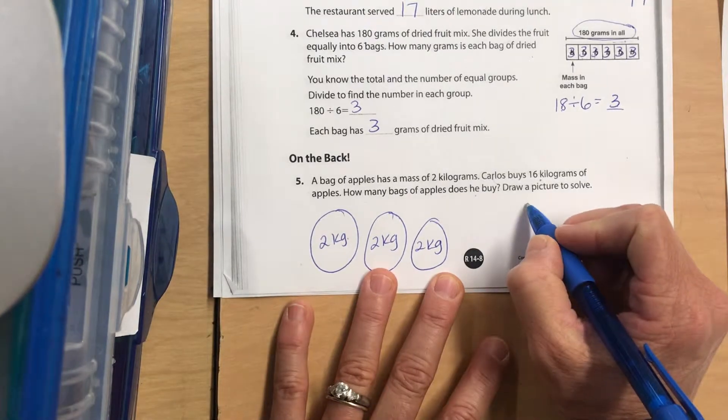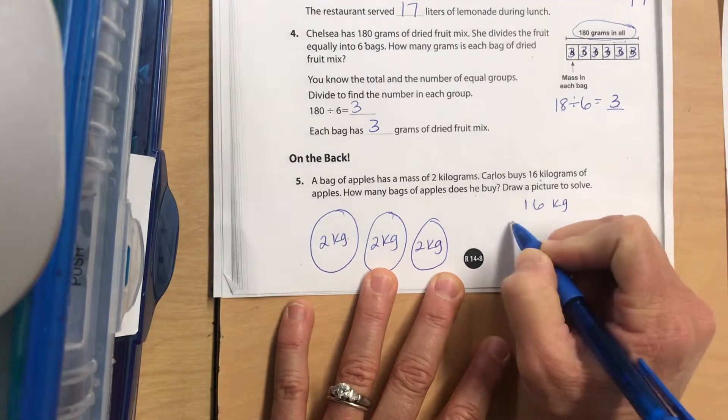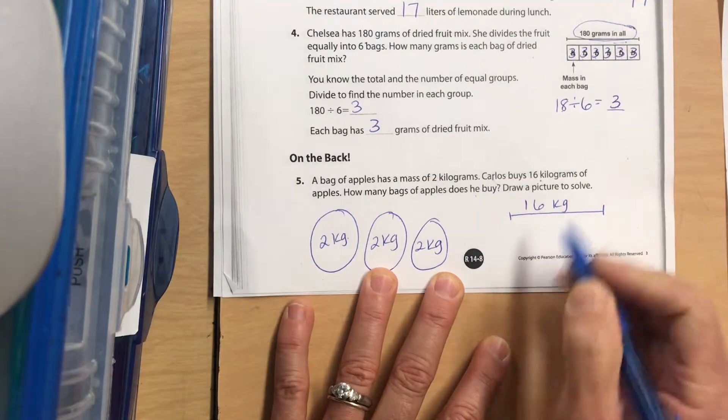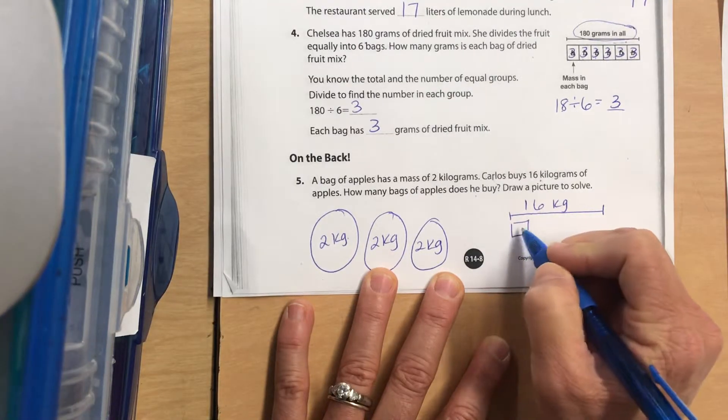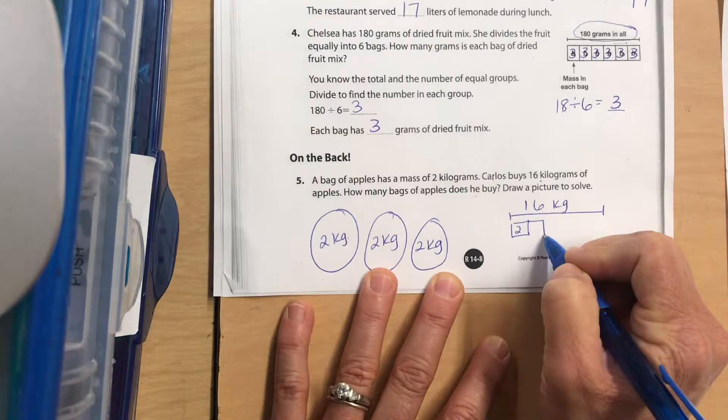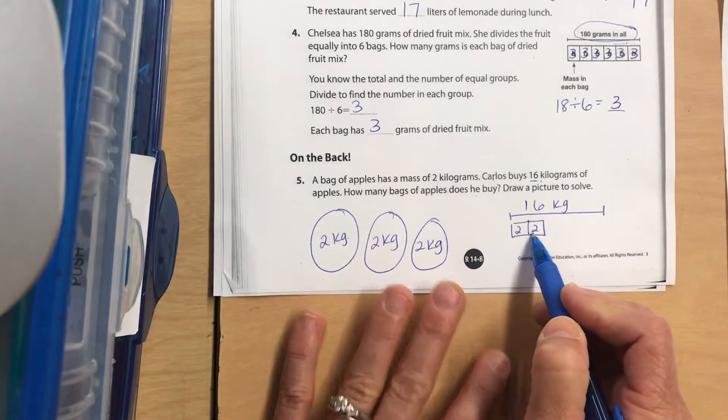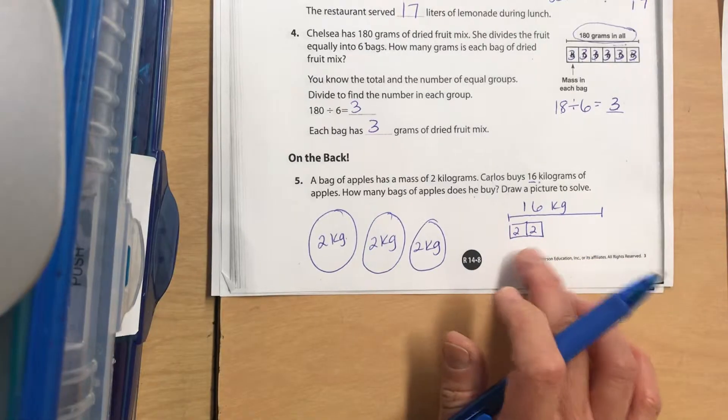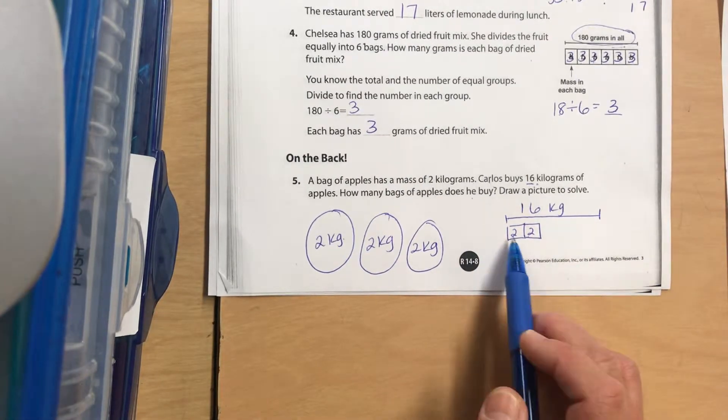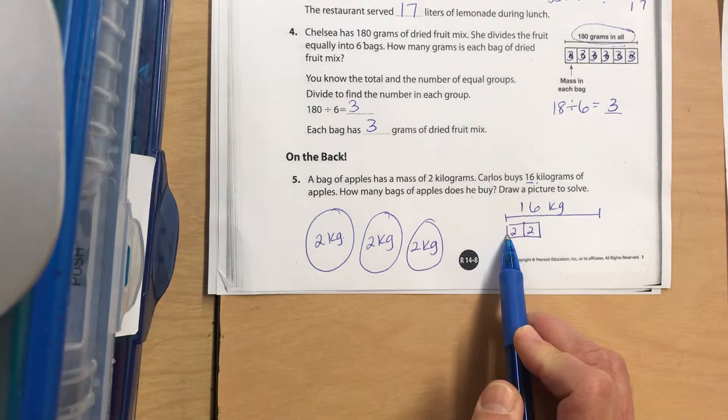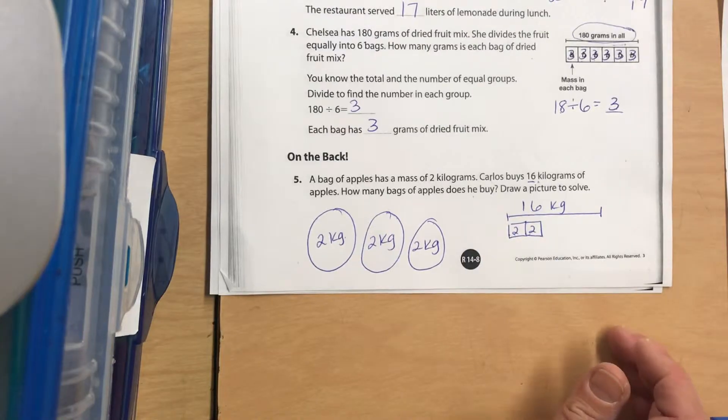You could also do a bar diagram with 16 kilograms at the top, and you're just going to keep adding two kilograms at a time until you get up to 16. Each one of these is a bag of apples. So pause it and figure out how many bags of apples did he buy if each bag weighs two kilograms and he bought a total of 16 kilograms.